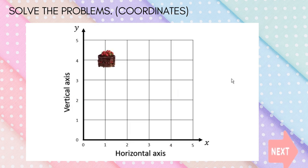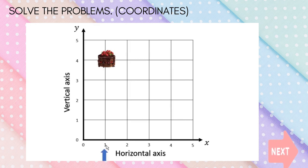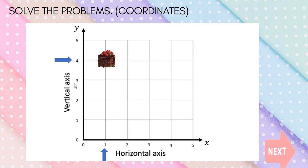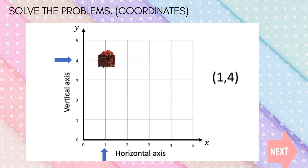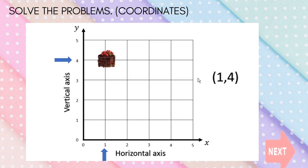The next example: look at the X axis — it is 1. Then look at the Y axis: 1, 2, 3, 4. So the answer is (1, 4) — write the X axis first, then the Y axis.